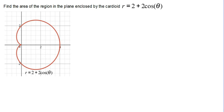To find the area of the region in the plane enclosed by the cardioid r equals 2 plus 2 cosine theta, we start with the formula to find the area of a polar curve, which is an integral from the starting point of the period to the ending point of the period of 1 half r squared d theta.